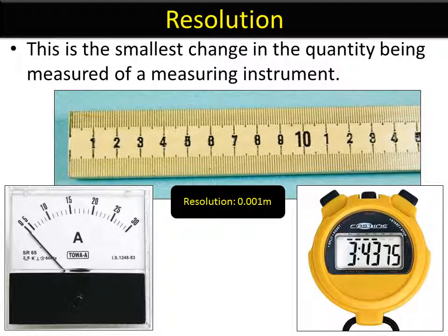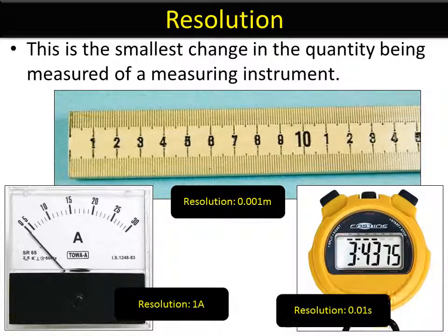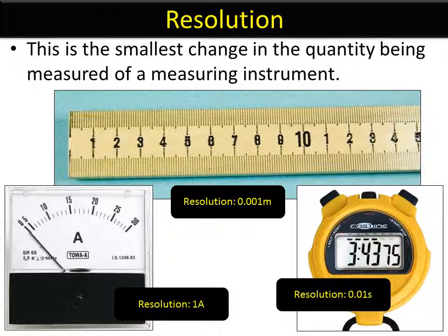Can you spot the resolution in the ammeter? It is 1 amp. If you look between 15 and 20, you have four dashes indicating 16, 17, 18, and 19 amps. So the resolution is 1 amp. On a stopwatch, it would be a hundredth of a second, 0.01 of a second.